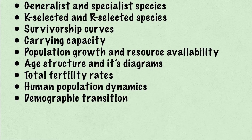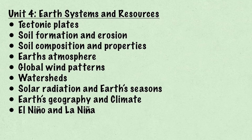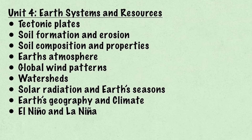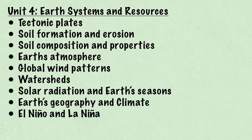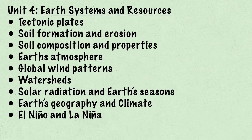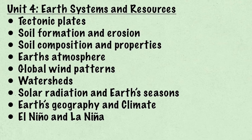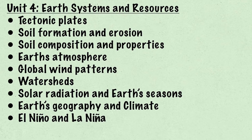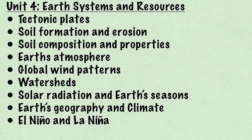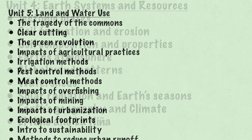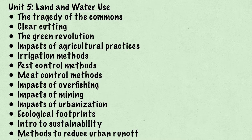Finally, we have Unit 4: Earth Systems and Resources. This unit includes information about tectonic plates, soil formation and erosion, soil composition and properties, Earth's atmosphere, global wind patterns, watersheds, solar radiation and Earth's seasons, Earth's geography and climate, and El Niño and La Niña.